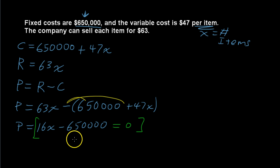Add $650,000 to each side and you get 16X equals $650,000, and then divide each side by 16 and you get X equals 40,625 items just to break even. That's the break even point.